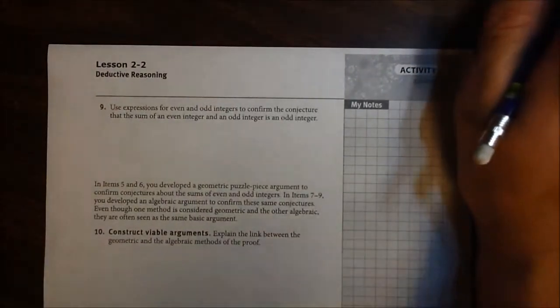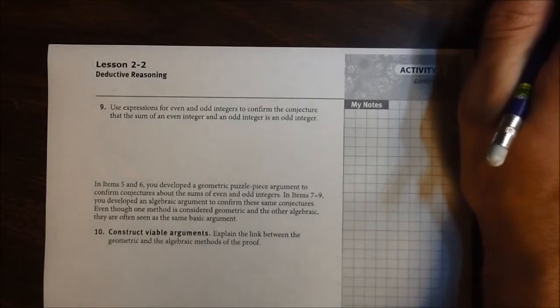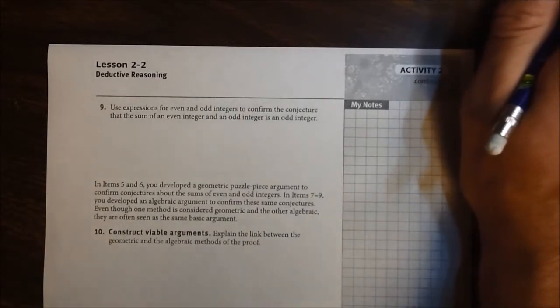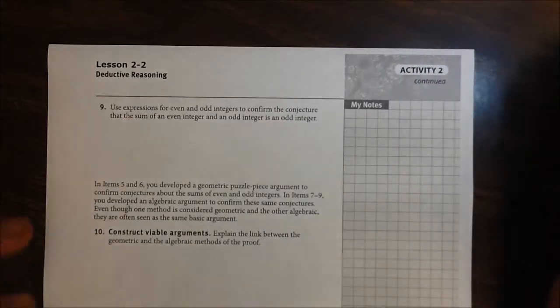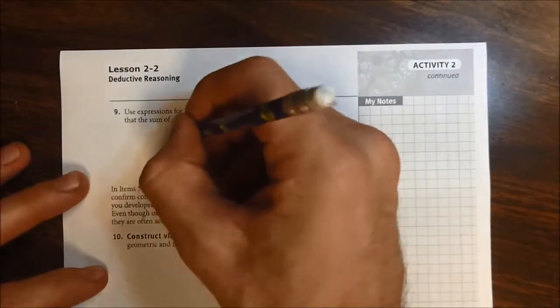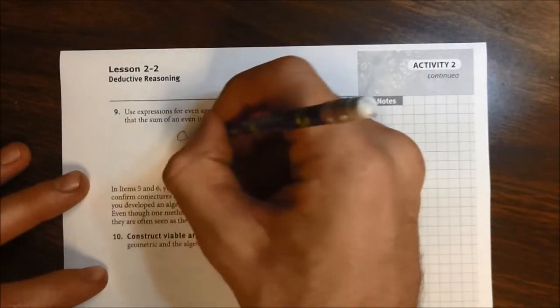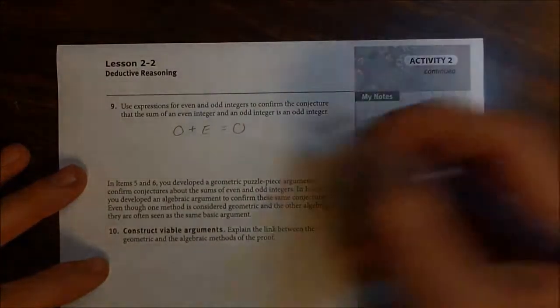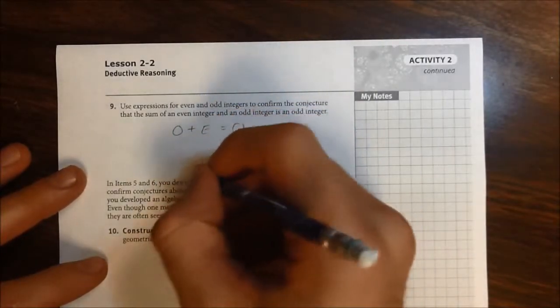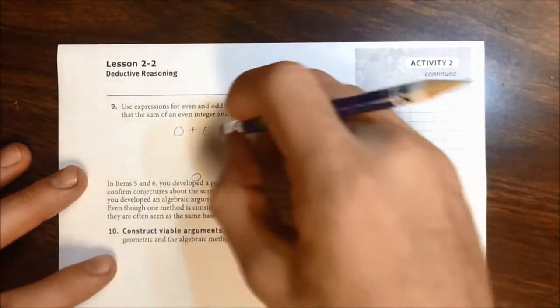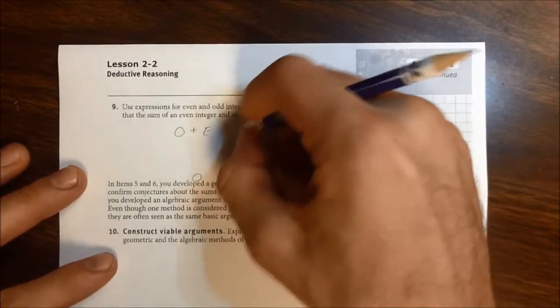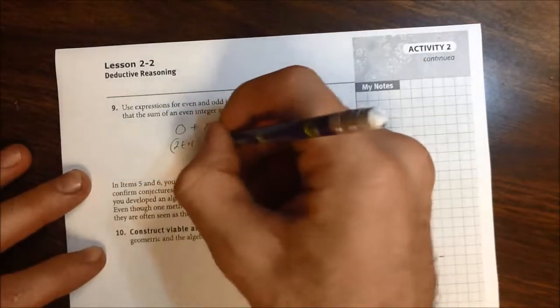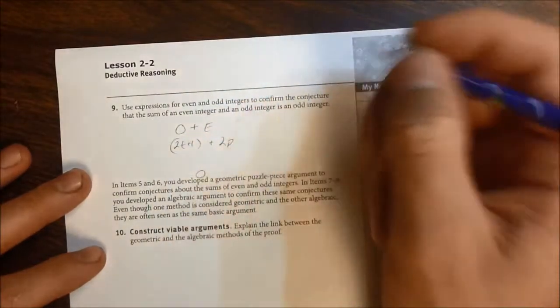Moving on, number 9, item 9 on the next page. Use expressions for even and odd integers to confirm the conjecture that the sum of an even integer and an odd integer is an odd. So here we go. So we're trying to figure out odd plus even is going to give us an odd. So up here on the top, I'm going to start with odd plus even. I'm going to work down to an odd integer. I'm going to use 2t plus 1 to represent my odd integer. I'm going to use 2 times p to represent my even.